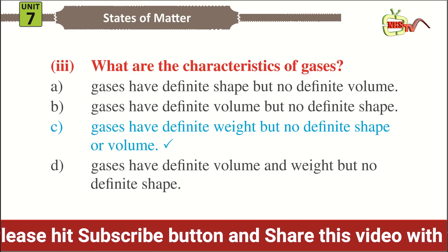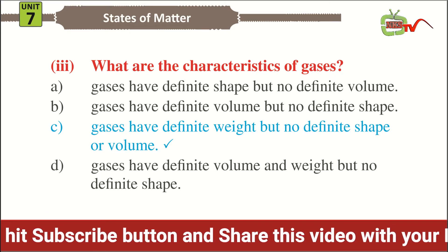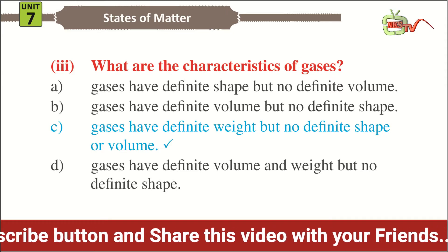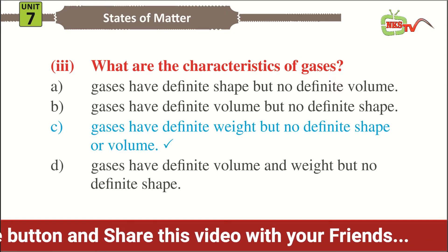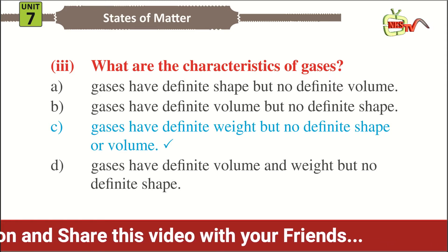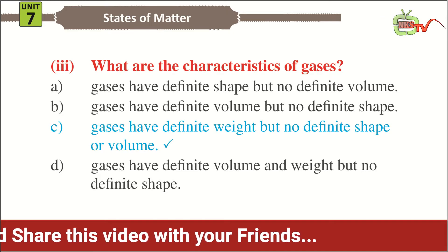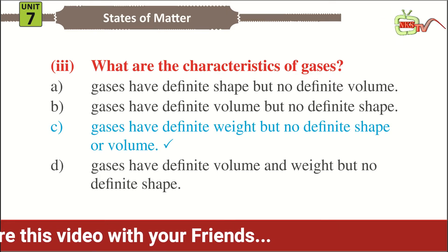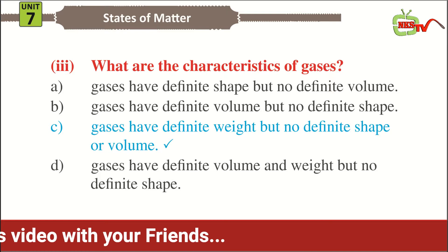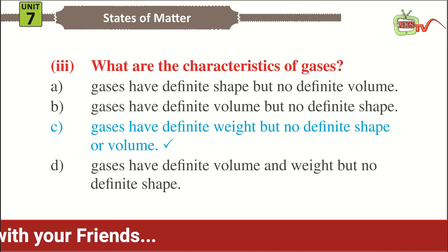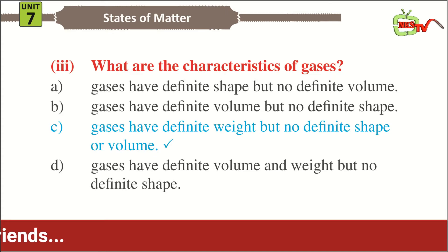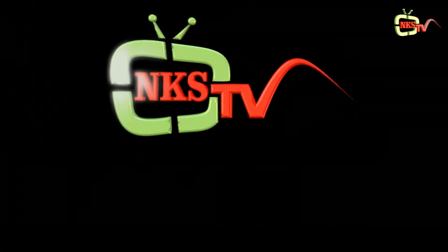Options: A) gases have definite shape but no definite volume; B) gases have definite volume but no definite shape; C) gases have definite weight but no definite shape or volume; D) gases have definite volume and weight but no definite shape. The correct option is C.